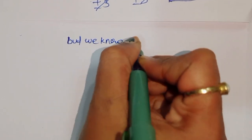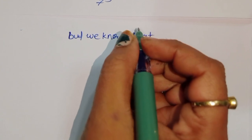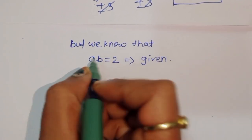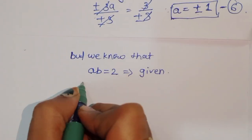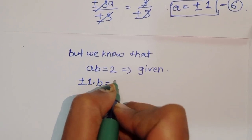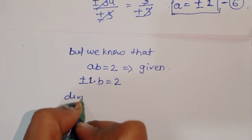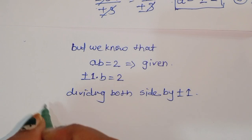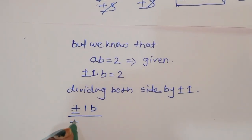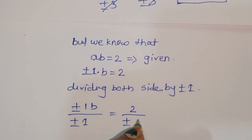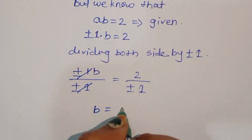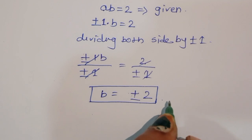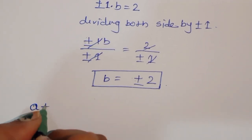From equation 1, ab is equal to 2. Substituting a equals plus or minus 1: plus or minus 1 times b equals 2. Dividing both sides by plus or minus 1, these cancel and we get b is equal to plus or minus 2. This is the value of b — equation 7.